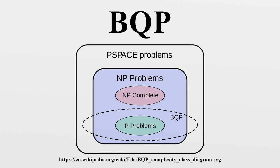In other words, there is an algorithm for a quantum computer that solves the decision problem with high probability and is guaranteed to run in polynomial time. On any given run of the algorithm, it has a probability of at most one third that it will give the wrong answer.